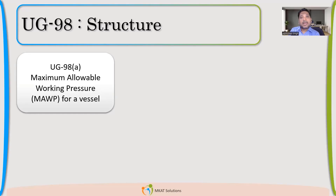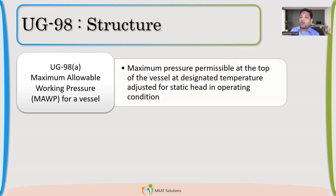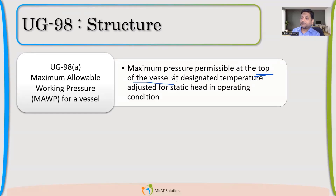At that temperature and pressure, in corroded condition — because we are talking about end of life. So UG-98A talks about the MAWP. One term used is 'at the top of vessel.' It talks about the maximum permissible pressure at the top of the vessel.